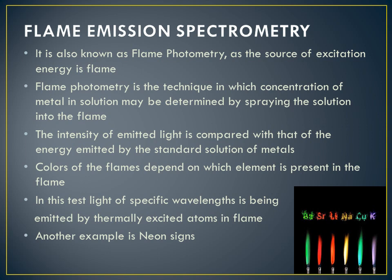For qualitative analysis, we get different spectral lines — the position of those lines gives qualitative information about which elements are present. The intensity of these lines gives us quantitative information about the concentration.